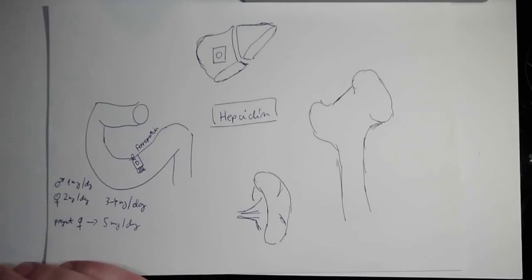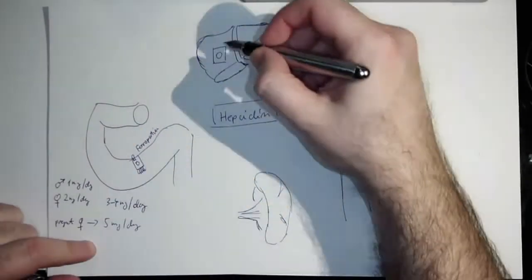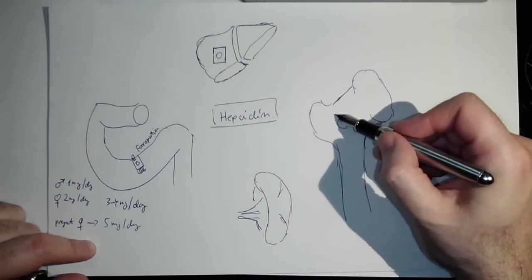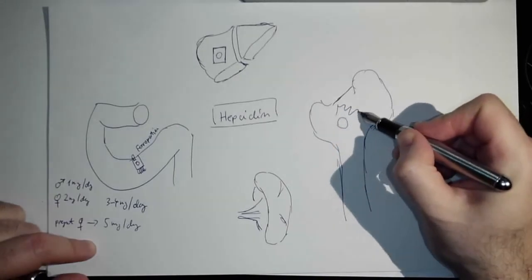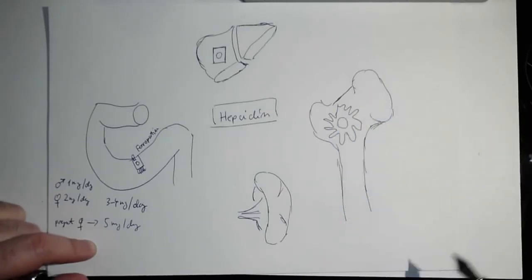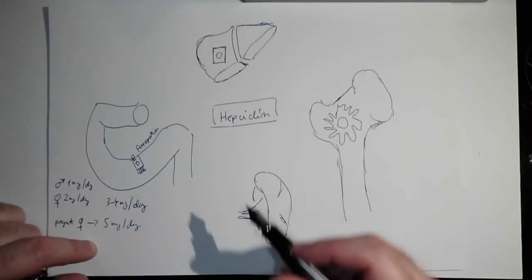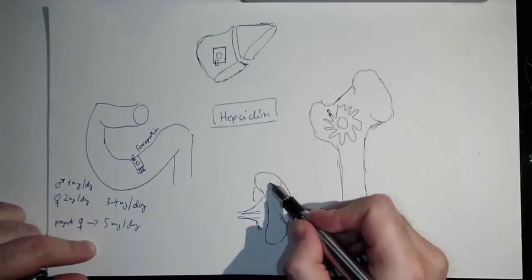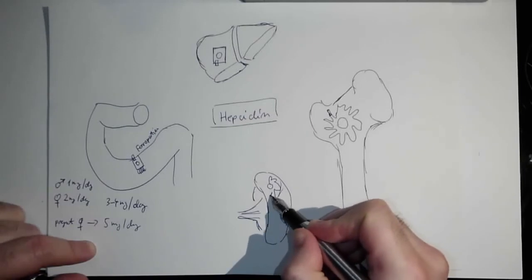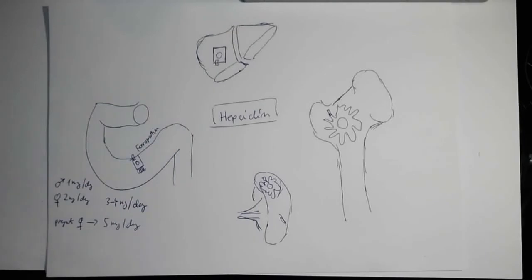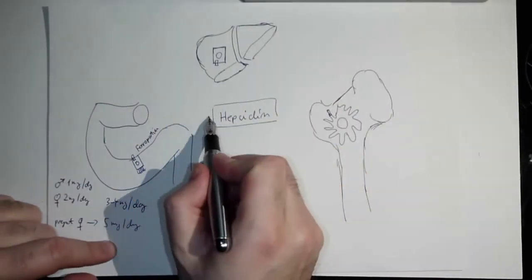Those certain cells are mainly enterocytes, also hepatocytes, and also the macrophages or in other words the cells of the reticuloendothelial system. So it's over here ferroportin, and over here as well, and over here we're going to have a macrophage in the spleen and it has ferroportin as well.